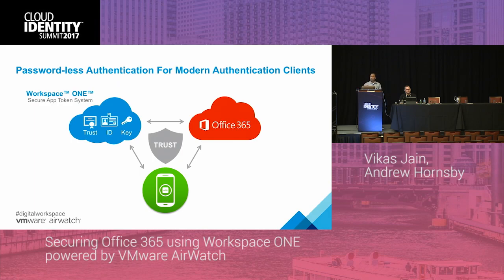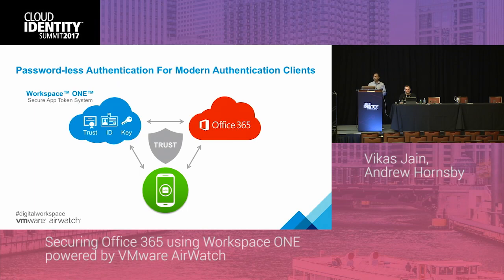Workspace ONE provides password-less authentication for modern authentication clients. Because Workspace ONE is powered by AirWatch, AirWatch pushes a security profile onto the device containing a certificate transported to the back end using platform-specific mechanisms. On iOS we use Kerberos to transport that certificate; on Android we use a tunneling mechanism. This provides a device-specific way to deliver a password-less experience when users access Office 365 content from their devices.